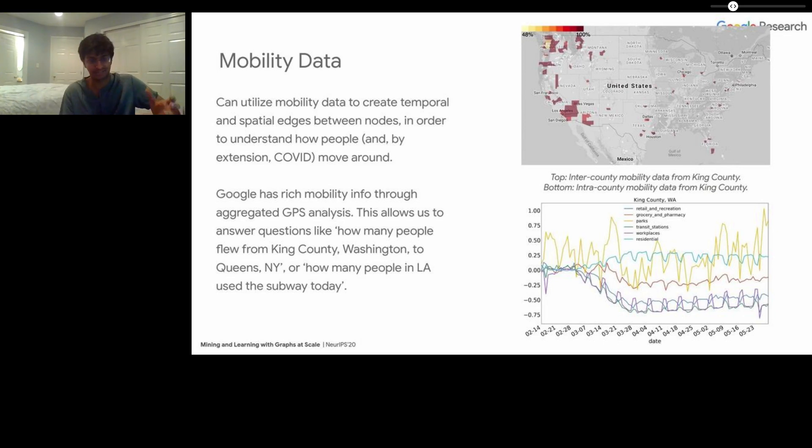Google has very rich mobility information through aggregated GPS analysis. Everybody carries around these smartphones in their pockets, and we're able to use that to understand how people are moving around. I want to be very clear about this - we were very privacy conscious about this data. We were aware this was extremely sensitive information. We made sure all of this information was aggregated and averaged out in such a way that it would be impossible to actually ever identify a single individual from the overall trend.